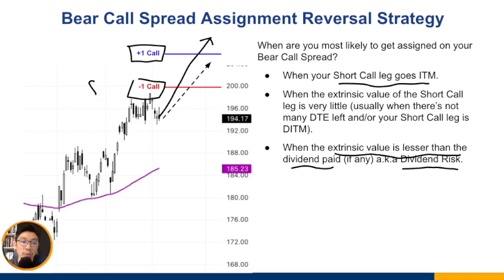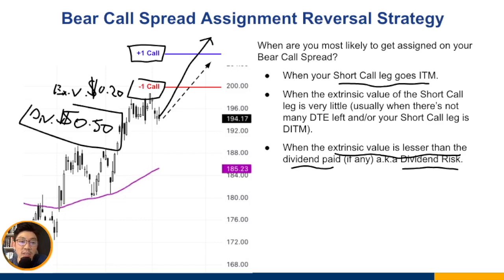For example, if this call option right now only has $0.20 of extrinsic value left, but the stock is paying $0.50 in dividend, then if the dividend is more than the $0.20 of extrinsic value left, the buyer of this call option is more incentivized to exercise it. When he exercises it, he gets 100 shares and the $0.50 dividend. If he just sold off his call option instead, he'd only get $0.20. So it makes more sense to exercise it and get the dividend.